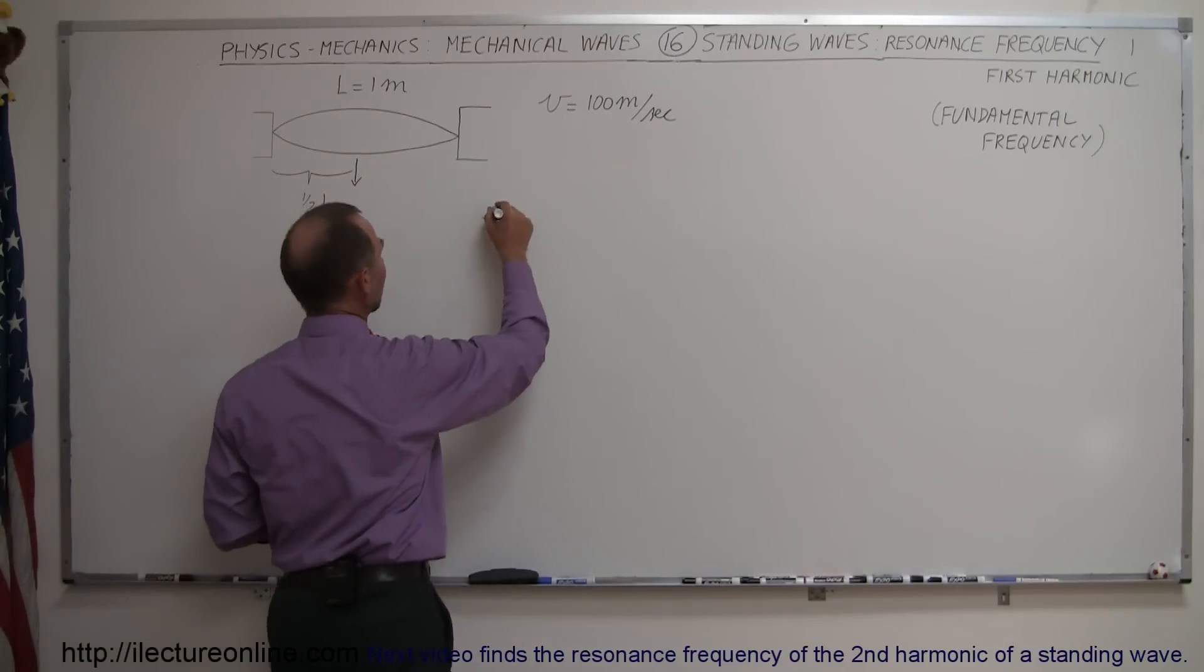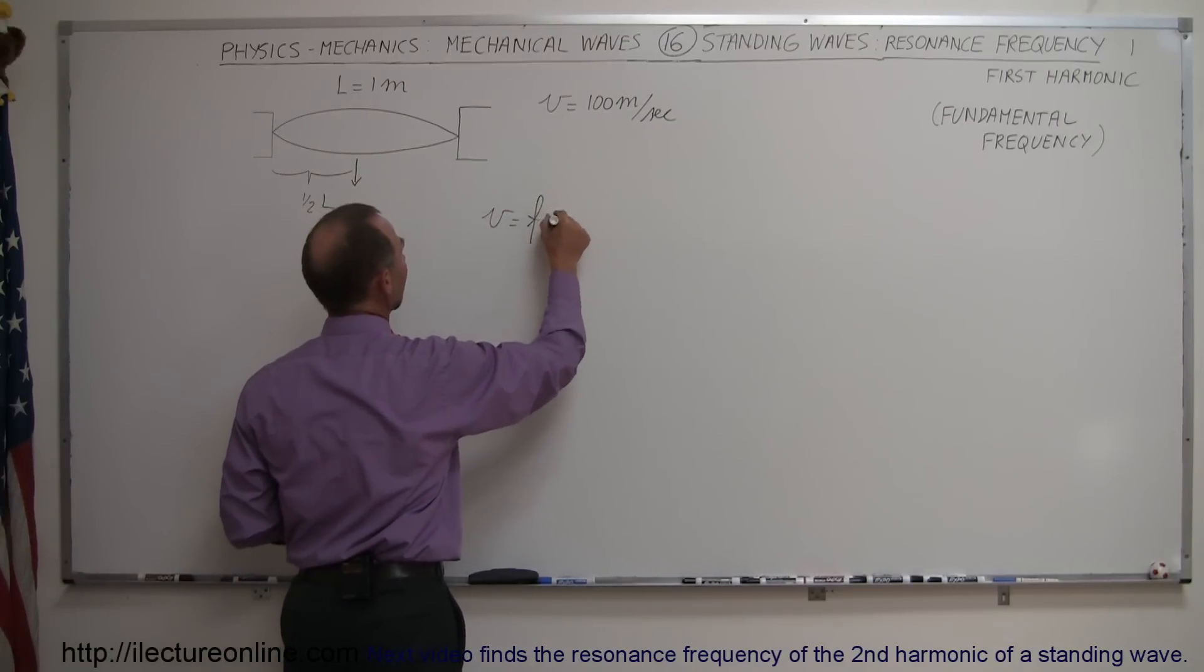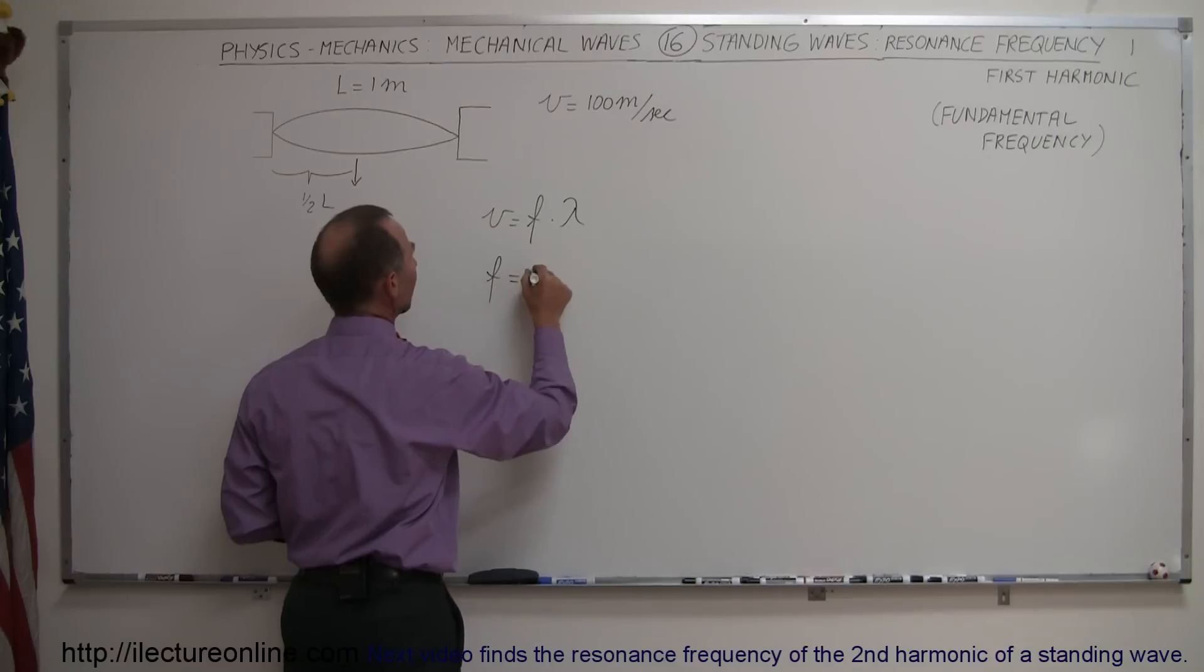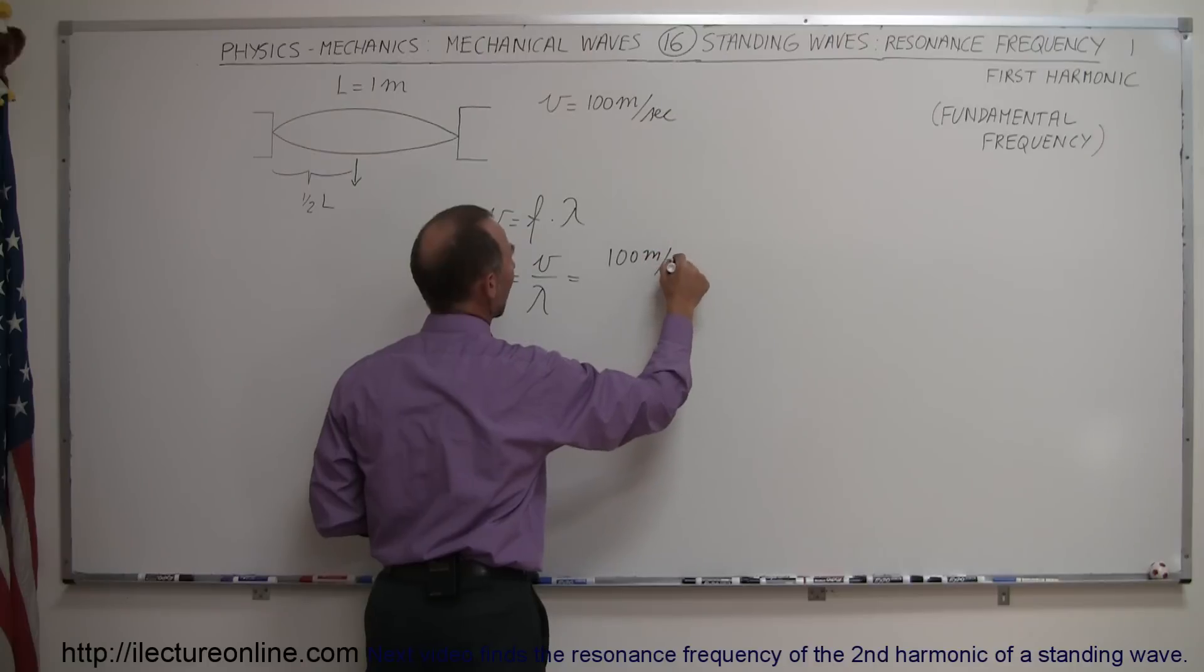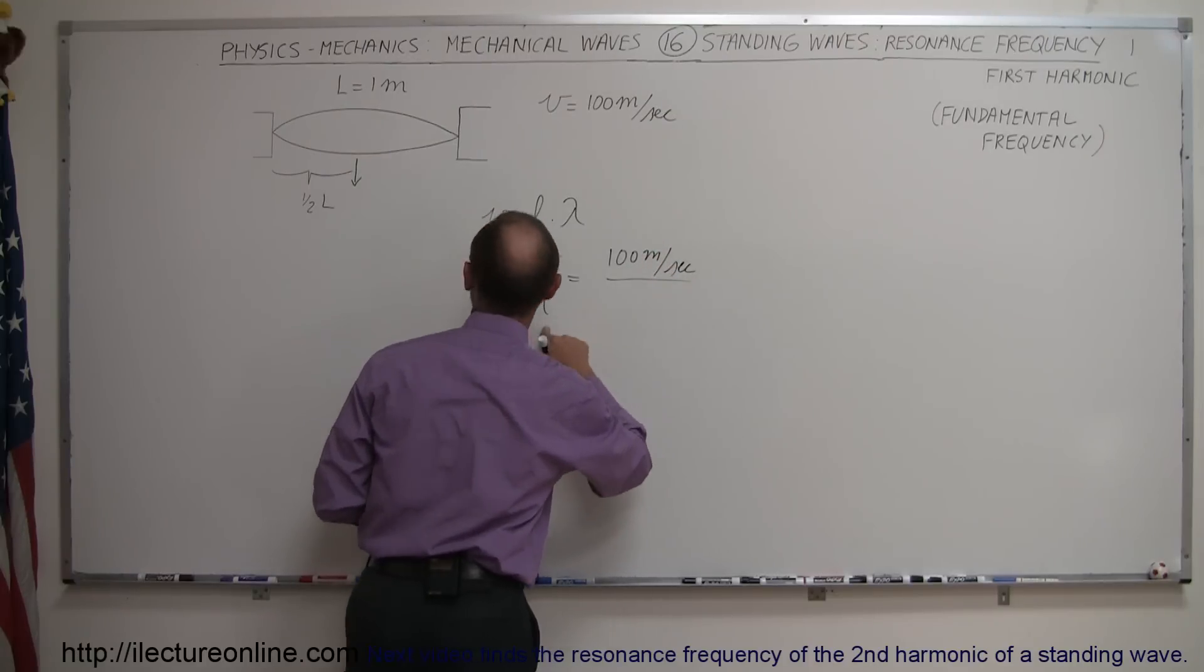We know that the velocity is equal to the frequency times the wavelength, so the frequency is equal to the velocity divided by the wavelength. The velocity was given to us at 100 meters per second, but now we also need to know the wavelength.